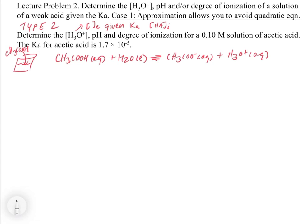It's important that you have that in mind. The next step is always to write out the Ka equation. So we have Ka equal to the concentration of H3O+ times the concentration of CH3COO- over the concentration of CH3COOH. In this case, Ka is 1.7 times 10 to the minus 5.